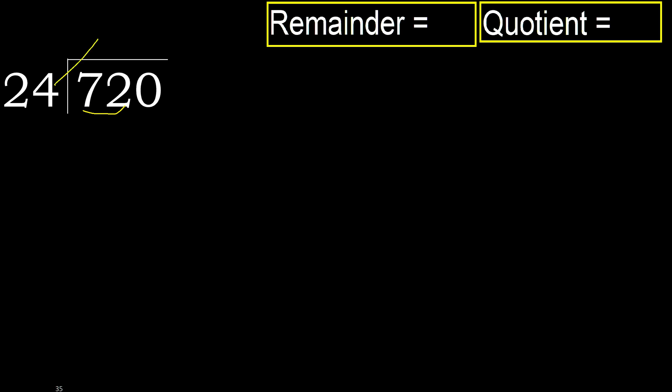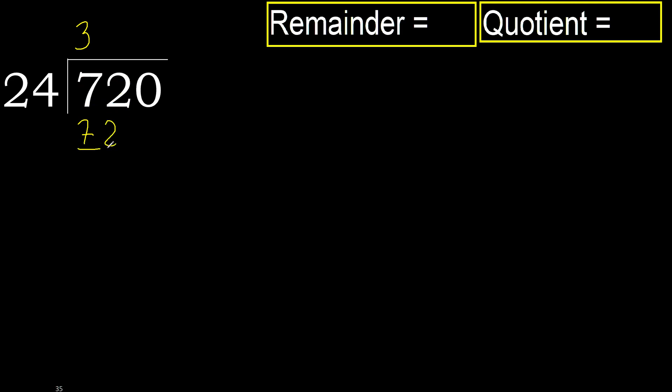24 multiplied by which number is nearest to 72, but not greater. 24 multiplied by 4 is greater, so multiplied by 3. 72 is not greater. 72 minus 72 equals 0.